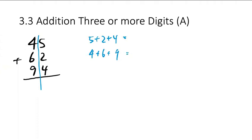So 5 plus 2, that is 7. 7 plus 4, that would be 11.